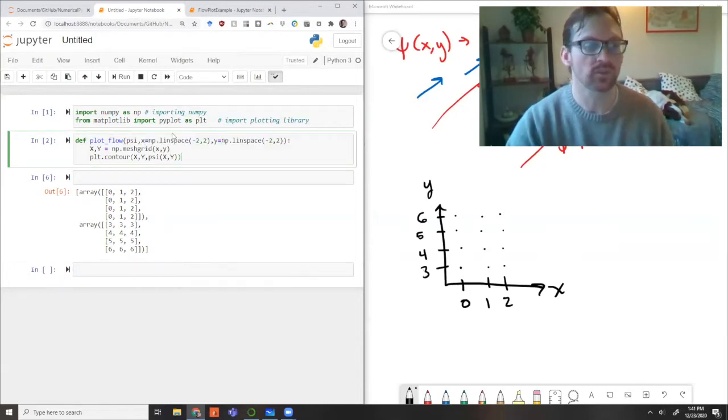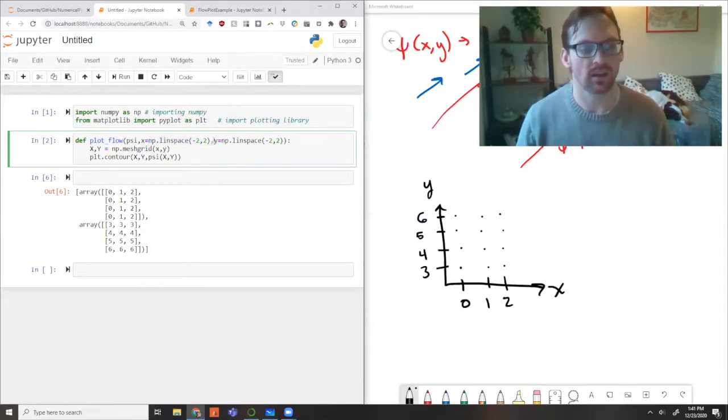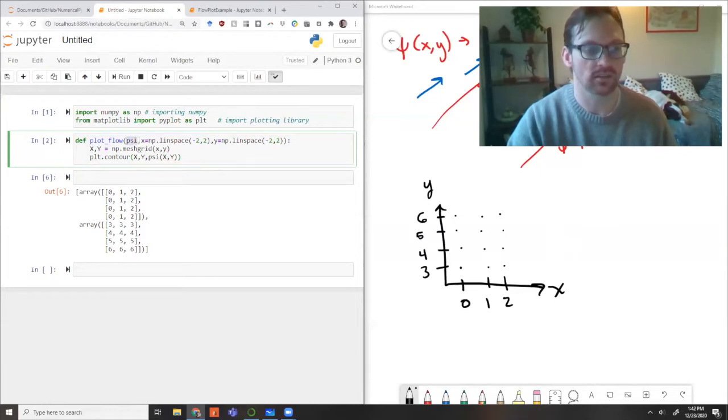Let's generate our points using this code. Now I need to define this xy, the thing that's going to be along the axis in both directions. Here I've just given a default value of numpy linspace minus 2 to 2 for both x and y. I think we've now closed the loop. This function takes in psi and the coordinates x and y, makes a set of 2D arrays, and then plots psi evaluated over that 2D grid.